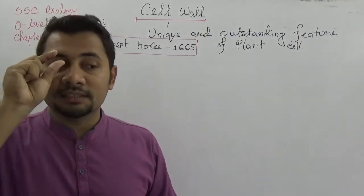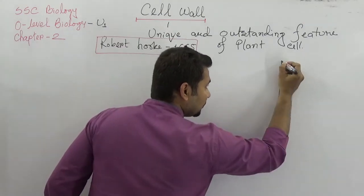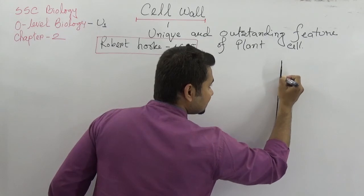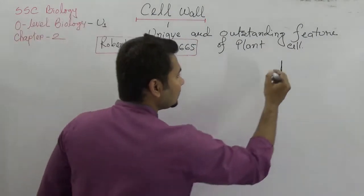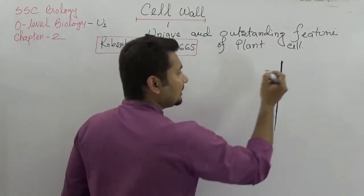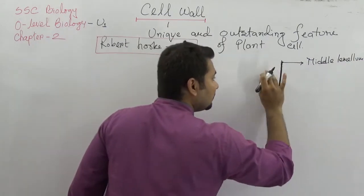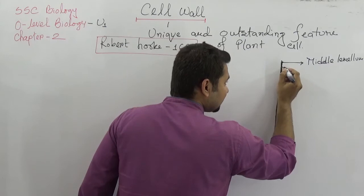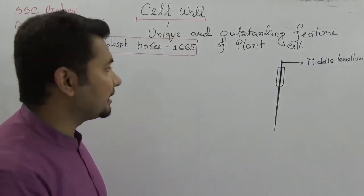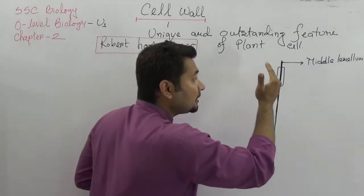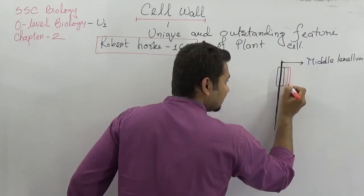Now let's look at the inner structure of the cell wall. In the middle of the layers there is the middle lamella — this is an inert material. On both sides of the middle lamella, the first layer is the primary layer. Then, from the secretion of protoplasm, the secondary layer gradually develops, and there will be three layers which are called the secondary layers.